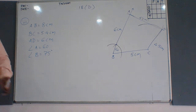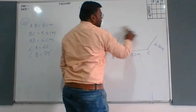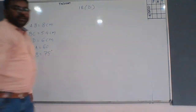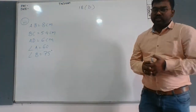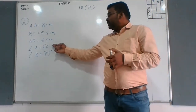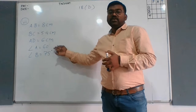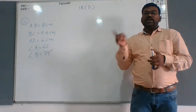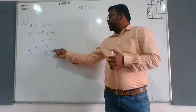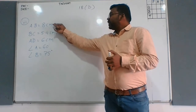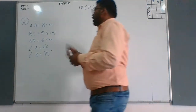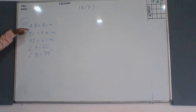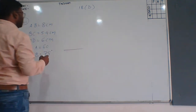Using this information we have to draw the quadrilateral. Observe the given information — this time two angles, angle A and angle B, are given. We will select the base that includes both angles. Since both angle A and angle B are given, we take AB as the base because side AB includes both angles.